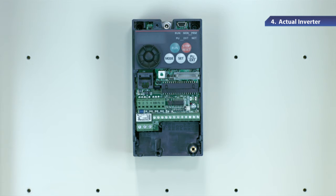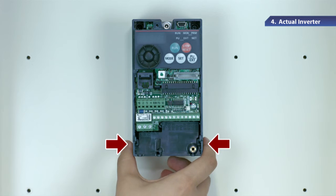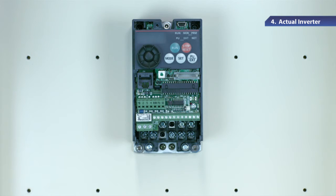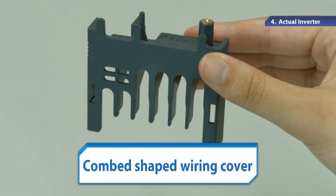Next, let's remove the wiring cover for power supply wiring. To remove it, hold both sides of the cover as indicated with an arrow, and pull it toward you. To ensure safety, the wiring cover is designed not to allow users to touch the metallic parts of the power supply. As it looks like a comb, it's called a comb-shaped wiring cover.